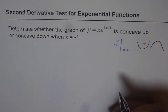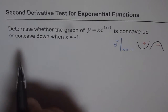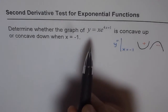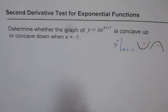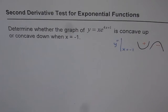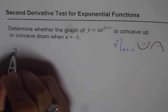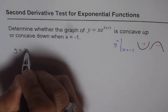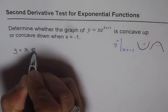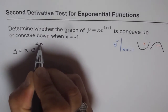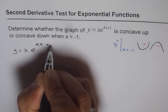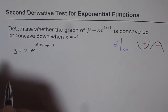The question says: determine whether the graph of y equals x times e to the power of 4x plus 1 is concave up or concave down when x equals minus 1. We are given y equals x times e to the power of 4x plus 1, so we need to find the second derivative.